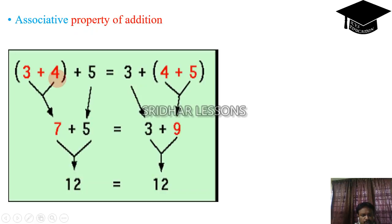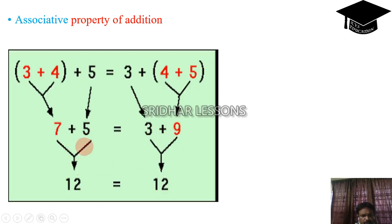We will see the associative property of addition with an example. (3 plus 4) plus 5 is equal to 3 plus (4 plus 5). The addition of 3 plus 4 is 7, plus 5 gives 12. Similarly, 4 plus 5 is 9, and 3 plus 9 is 12. Both are same. This property is known as the associative property of addition.